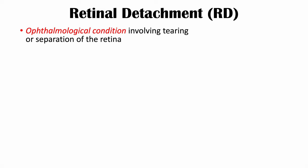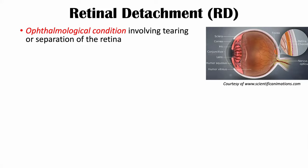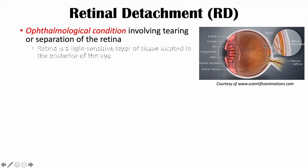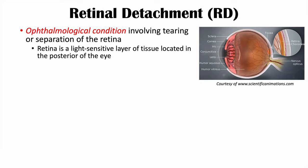Retinal detachment is an ophthalmological condition involving tearing or separation of the retina. The retina is the light-sensitive layer of tissue located in the posterior of the eye — at the back of the eye. This light-sensitive layer of cells includes the rods and cones that allow for vision.